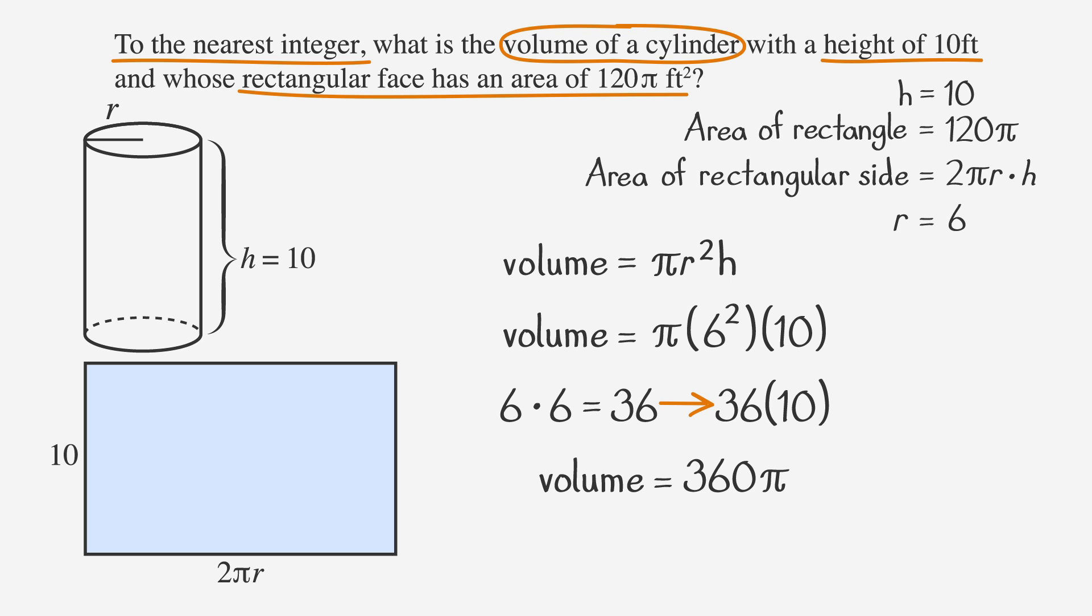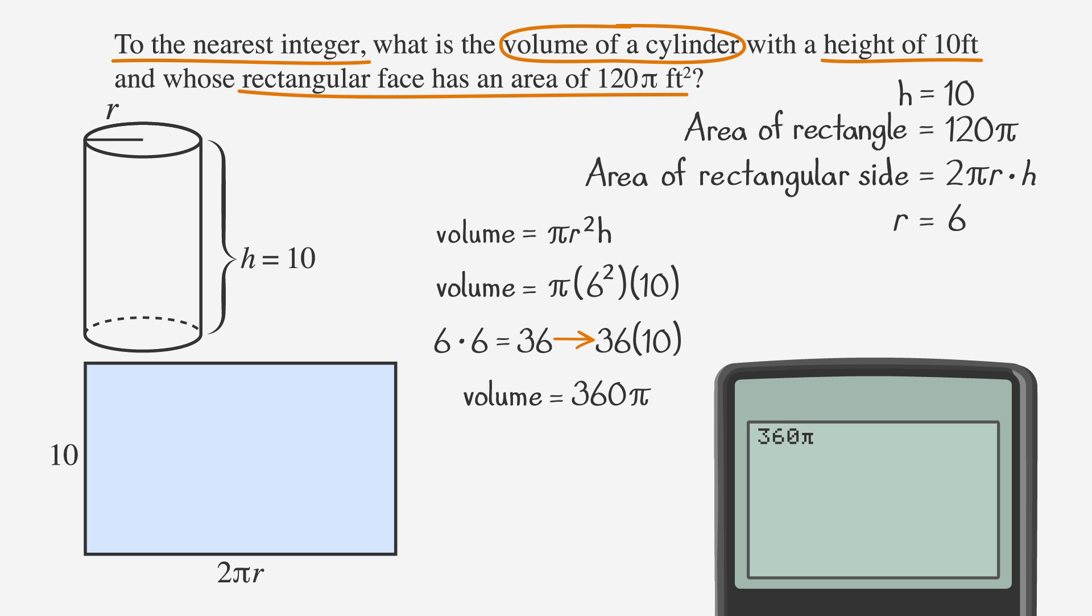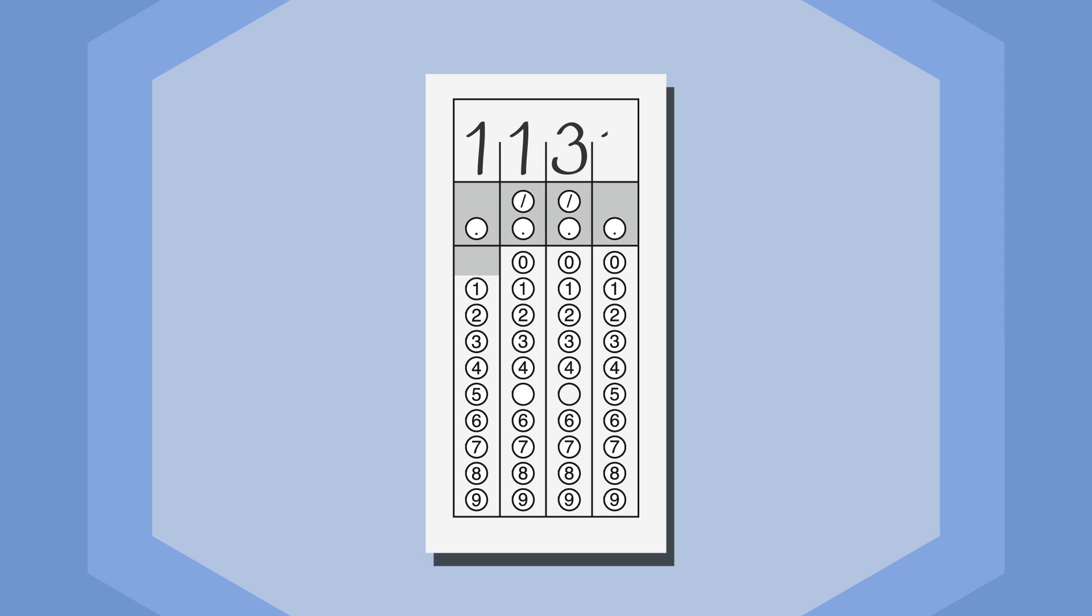However, since we're trying to find the nearest integer value, we need to plug in 360 times pi into our calculator to get 1130.9. Rounding up, we find that our answer is 1131. Now we can fill that into our grid in with the right answer. Great work.